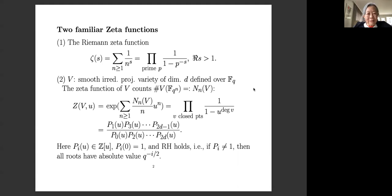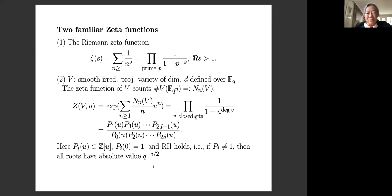The second zeta function is attached to a smoothly reducible projective variety defined over a finite field. Its zeta function counts the number of rational points over finite extensions of the base field. When we collect these numbers together and organize them in the right way, that zeta function can also be expressed as an infinite product over closed points in the form of 1 over 1 minus u to the degree of the points.